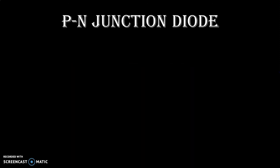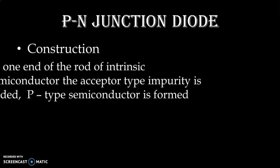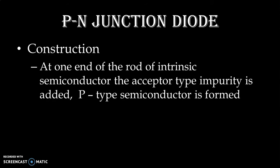Let us understand how the PN Junction Diode is constructed. At one end of the rod of intrinsic semiconductor — we know that it is a pure semiconductor without any impurity — the acceptor type impurity is added, and P type semiconductor is formed.